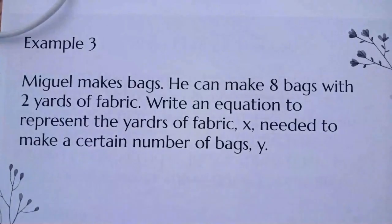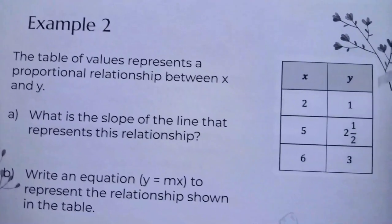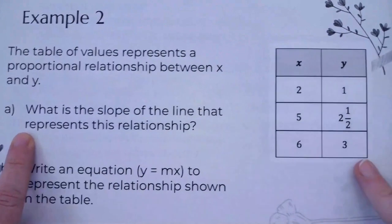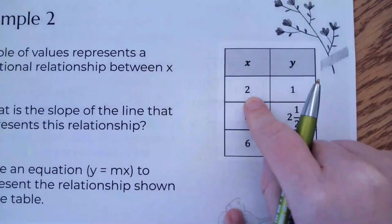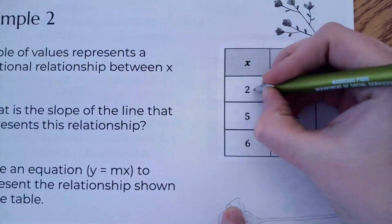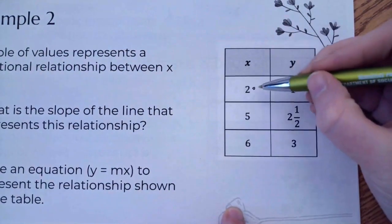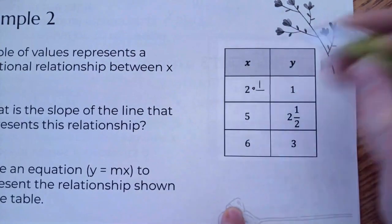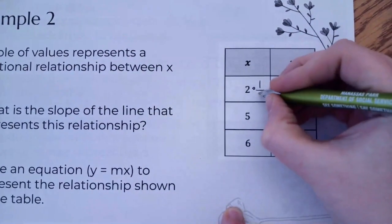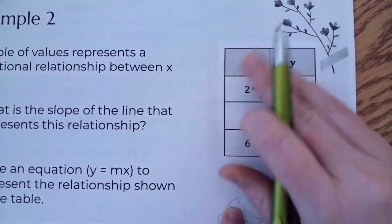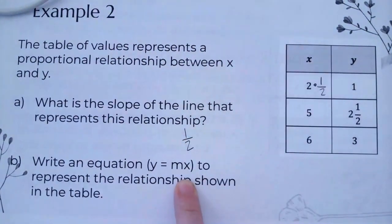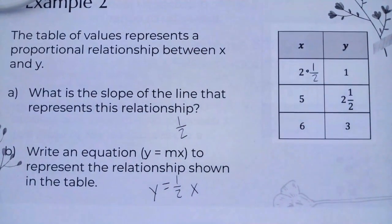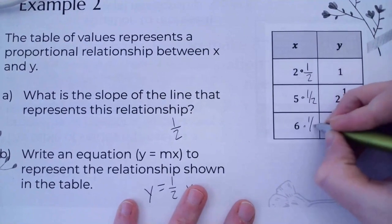On example 2, the table of values represents a proportional relationship between x and y. What is the slope? This one looks like we're dividing, but remember, dividing is the same thing as multiplying by a fraction. What am I multiplying 2 by to get to 1? I'm dividing by 2, so my answer is multiplying by one half. So my slope is one half, and my formula is y equals one half x.